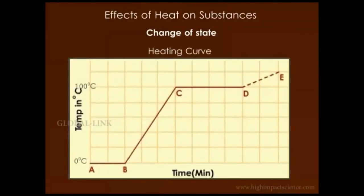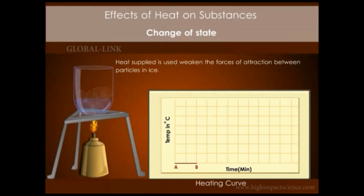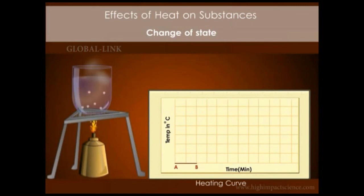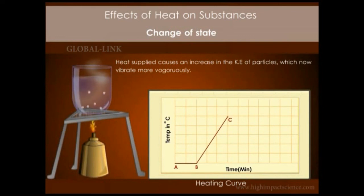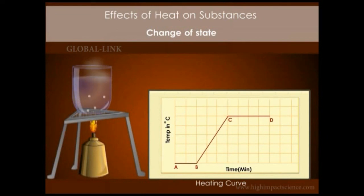If we draw a graph of temperature against time, we obtain a curve. At region AB, the temperature remains constant until all the ice has melted — the heat supplied is used to weaken the intermolecular forces of attraction between the ice particles; this temperature is called the melting point. At region BC, the temperature rises steadily as heat energy causes an increase in the kinetic energy of the particles. At region CD, the temperature remains constant again until all the water is converted to steam — the heat supplied weakens the forces of attraction rather than increasing kinetic energy; this temperature is called the boiling point.